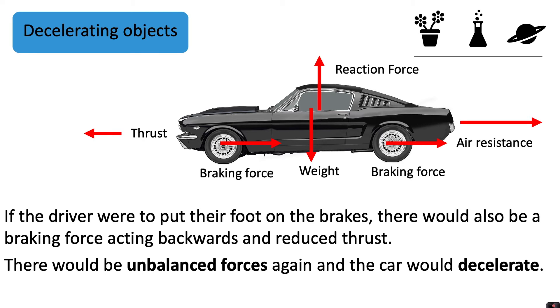If you look at all of the arrows facing right, you've got braking force and air resistance. All together, they would make one very large arrow facing to the right compared to that very small arrow which is the thrust facing to the left. So the forces are unbalanced again and the car would decelerate.